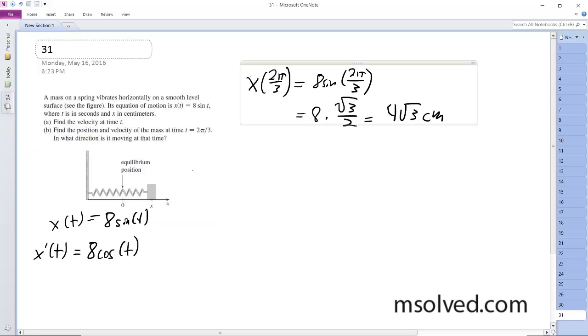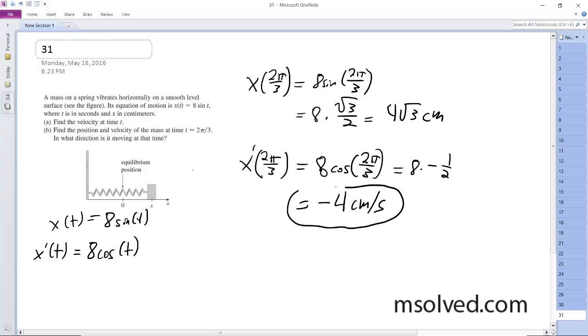To find the velocity, we plug in x'(2π/3). We get 8cos(2π/3), which is 8 times negative 1/2, and we end up with -4 centimeters per second. And this was the position.